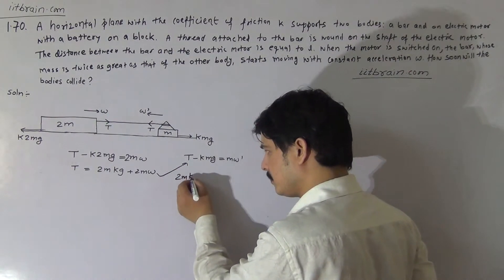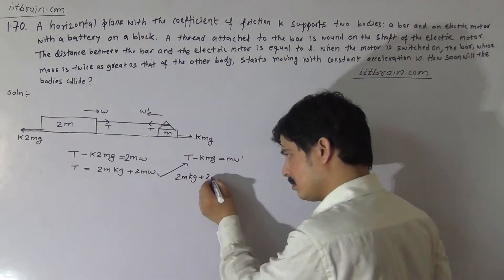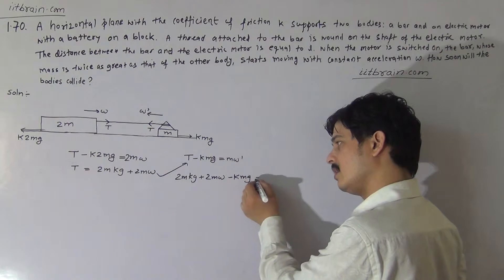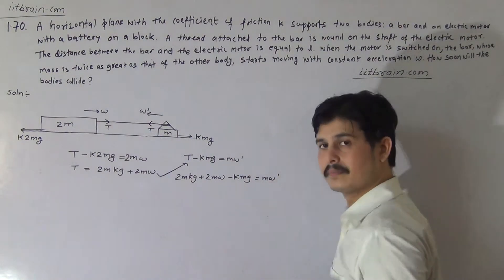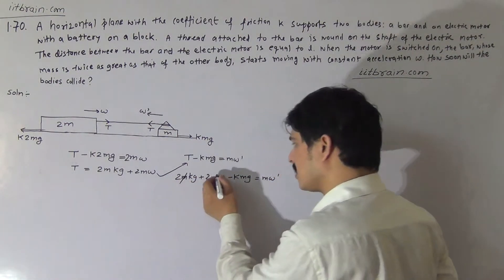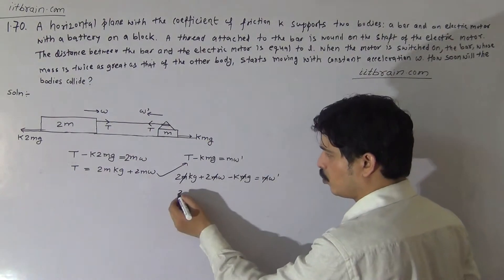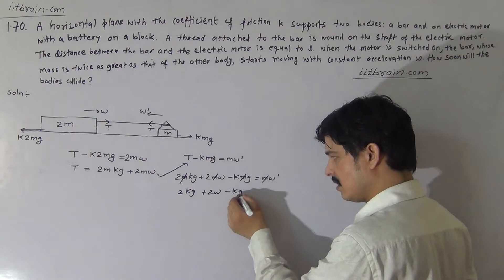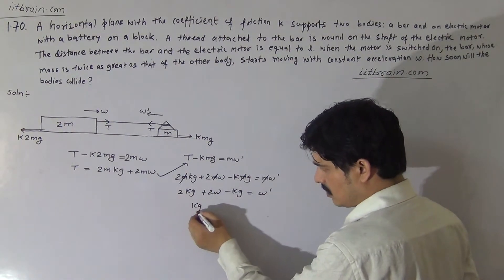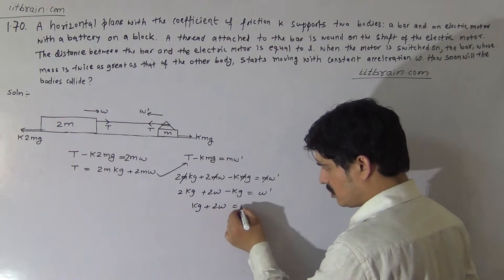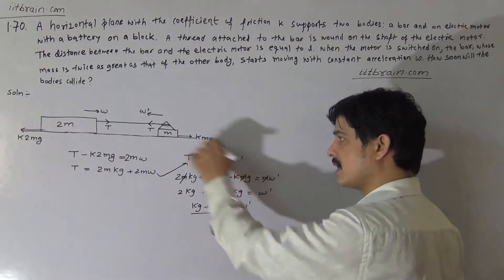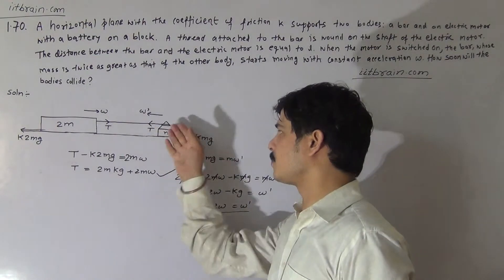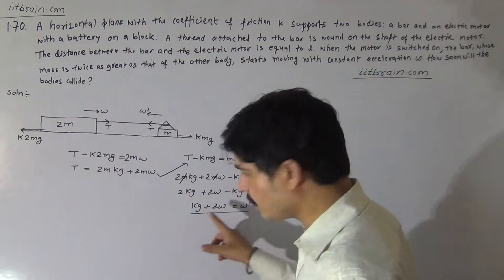Substituting the value of T: (2mkg + 2mw) − kmg = m × w′. Cancelling the term of mass: 2kg + 2w − kg = w′. So kg + 2w = w′. Therefore, the acceleration of the motor plus block system in the backward direction is w′ = kg + 2w.